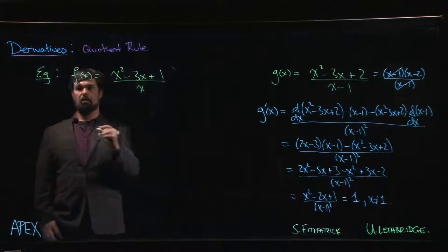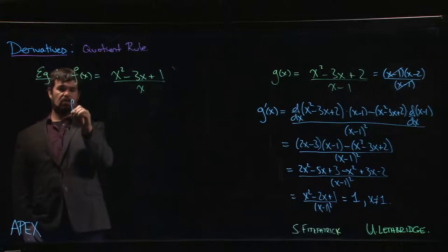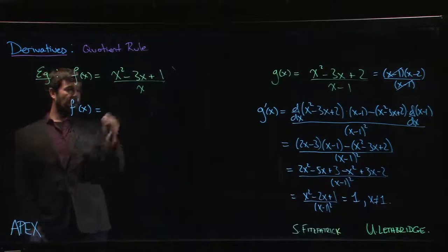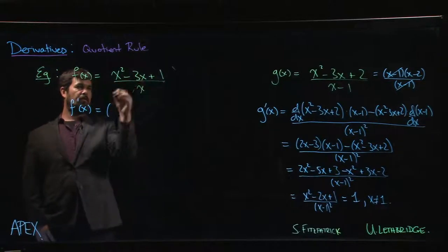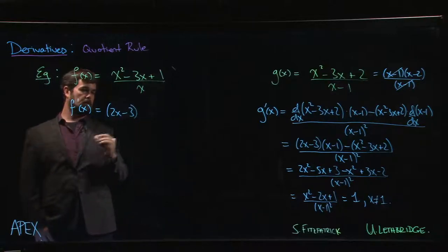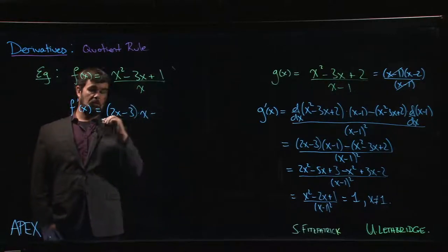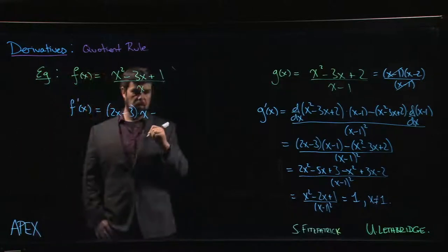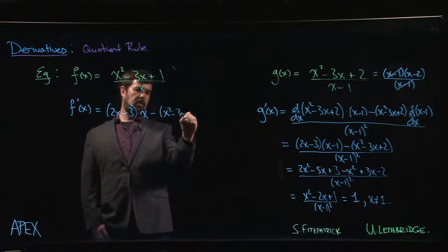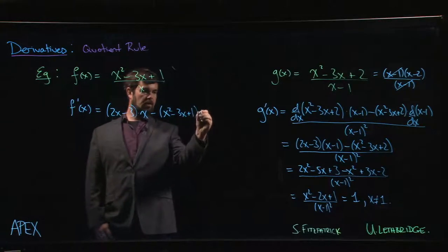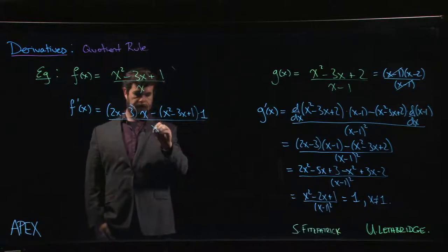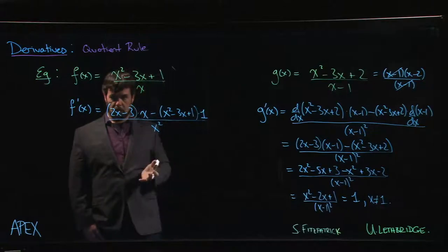Again, we could do this one of two ways. We could apply the quotient rule directly. And let me just jump straight to the answer. Derivative of the top is going to be 2x minus 3 times the bottom. Once you get the hang of the quotient rule, you can do this in one go, minus the top, x squared minus 3x plus 1, times the derivative of the bottom, which is just 1, all over the bottom squared.